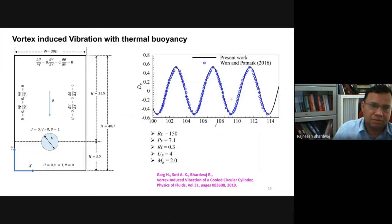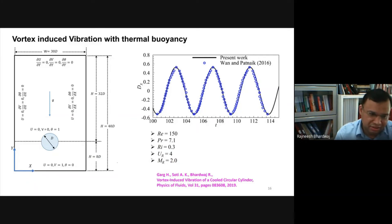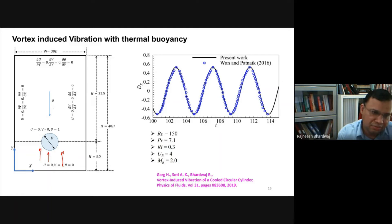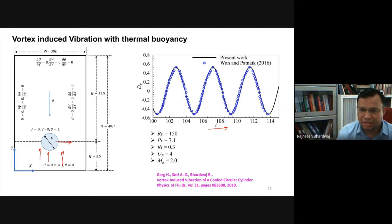Thermal buoyancy was added to the code via a source term in the y-momentum equation using the Boussinesq approximation, which creates a source term based on density variation with temperature without modeling full density variation in the field. In the presence of thermal buoyancy, the cylinder response changes. With gravity aligned appropriately, the instantaneous cylinder response matches well with published data, with the Richardson number (combining Grashof and Reynolds numbers) being the key parameter.